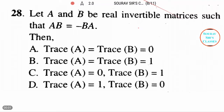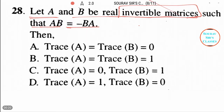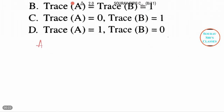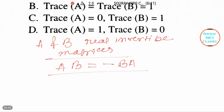Hello students, welcome to Short Sir Classes. Today's question is about: let A and B be real invertible matrices such that AB equals minus BA. These are the important terms — A and B are real invertible matrices, and we have also been given that AB equals minus BA.